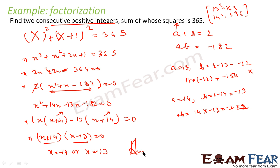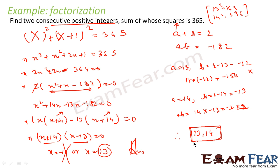The question asks for two consecutive positive integers. Since x equals minus 14 is not positive, I ignore that. The only value is x equals 13. My answer is 13 and 14, because I asked for two consecutive integers: x and x plus 1. Their sum of squares is 365 — the answer is 13 and 14.